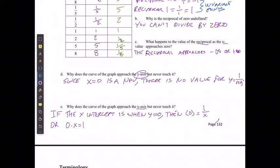and 0 times anything would have to equal 0, so this is impossible. You can't take 0 times anything and get it to equal 1.